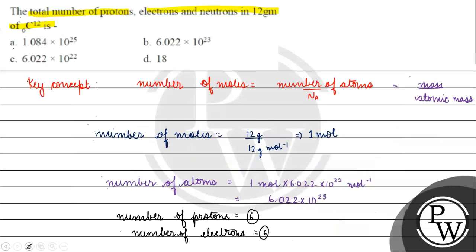This is the total number of protons, electrons and neutrons in 12 gram of ¹²C₆. Coming back to the question, the correct answer for this question will be option A. I hope you understood it well. Thank you, all the best!